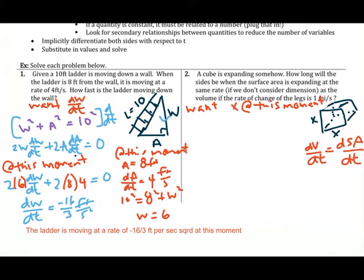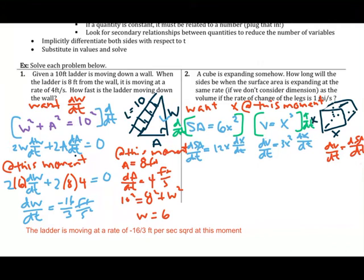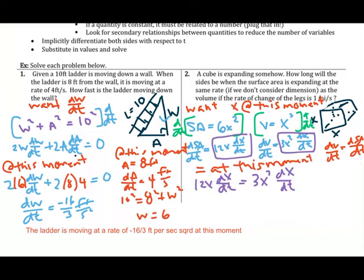Since the problem involves both surface area and volume, set up both formulas: surface area equals 6x squared and volume equals x cubed. Differentiating both with respect to t gives dSA/dt equals 12x dx/dt and dV/dt equals 3x squared dx/dt. Since the two rates are equal at this moment, we set the equations equal: 12x dx/dt equals 3x squared dx/dt.